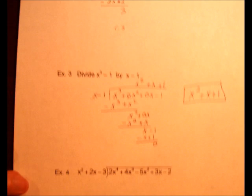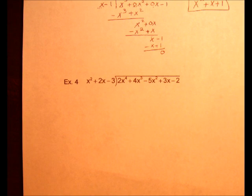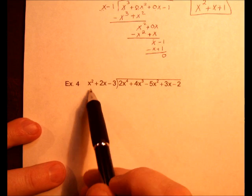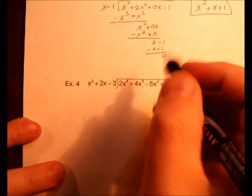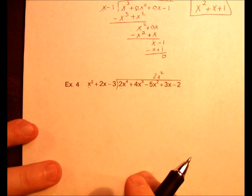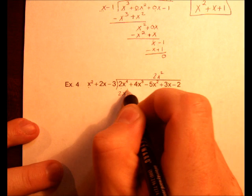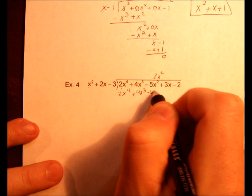Example 4. This one looks the same thing, it's just a little bit longer. And we have all of our powers: 2, 1, 0, and 4, 3, 2, 1, 0. So we'll start the process. x² times what gives me 2x⁴? That would be 2x². So make sure you put it over the squared guys. Multiply that out. That would be 2x⁴ + 4x³ - 6x².